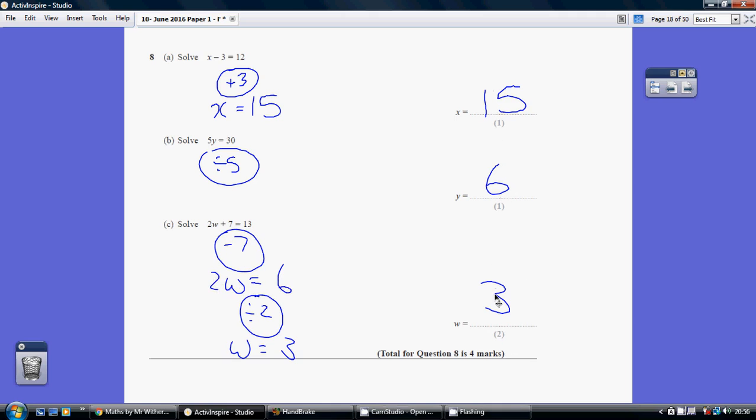Remember, with all of these, just check you've got it right. When you think you're done, pop the number back in and check it works. When X is 15, it's 15 take away 3, 12. Yes it is. When Y is 6, 5, 6 is 30. Yes they are. And when we pop 3 into this one, 2 lots of 3 is 6, 6 and 7 is 13. So we know we've got it right.